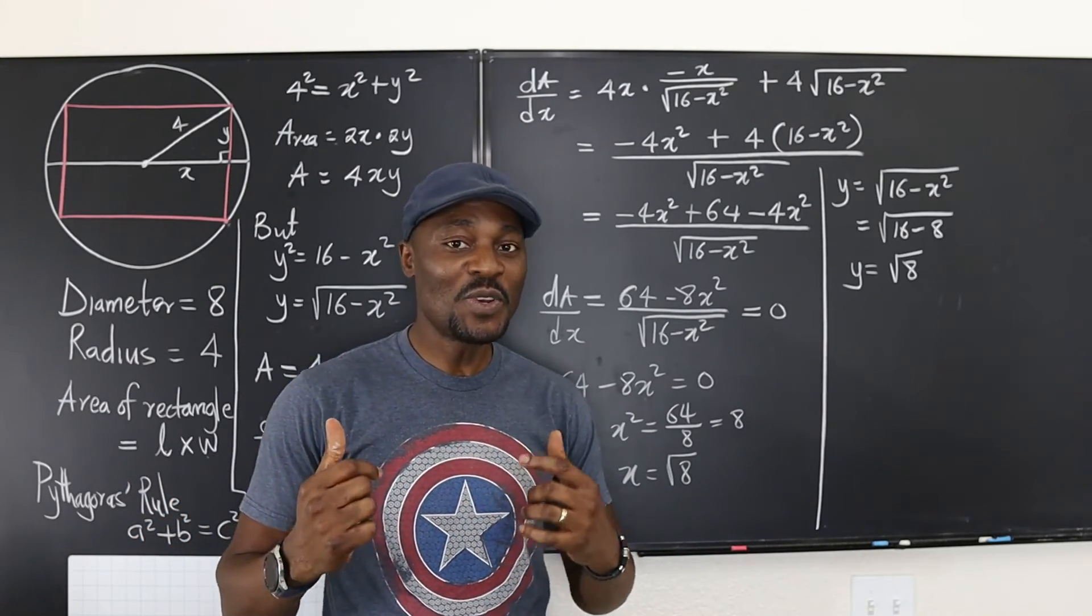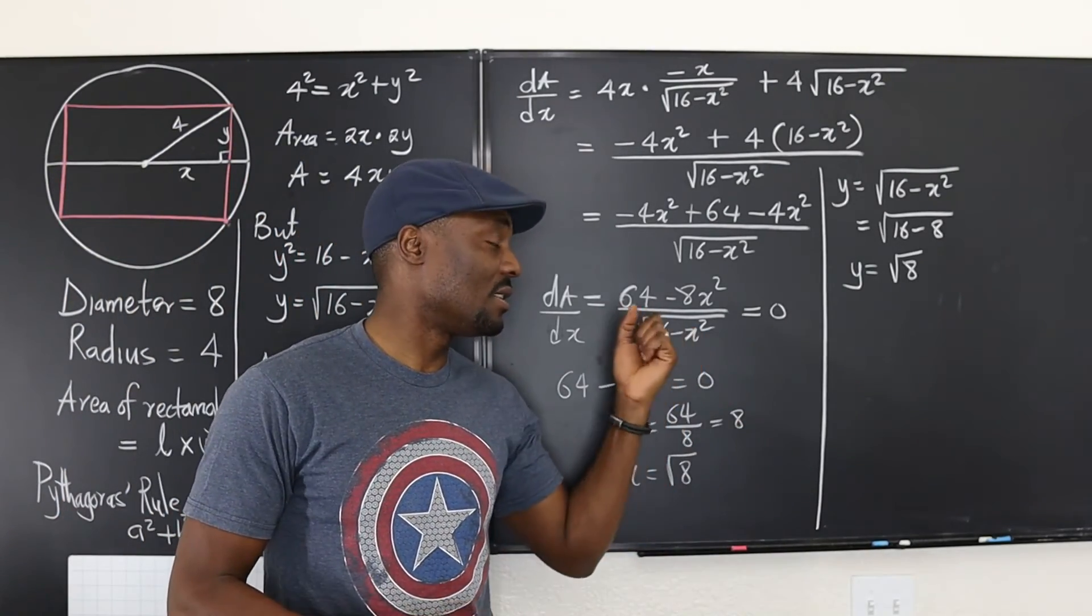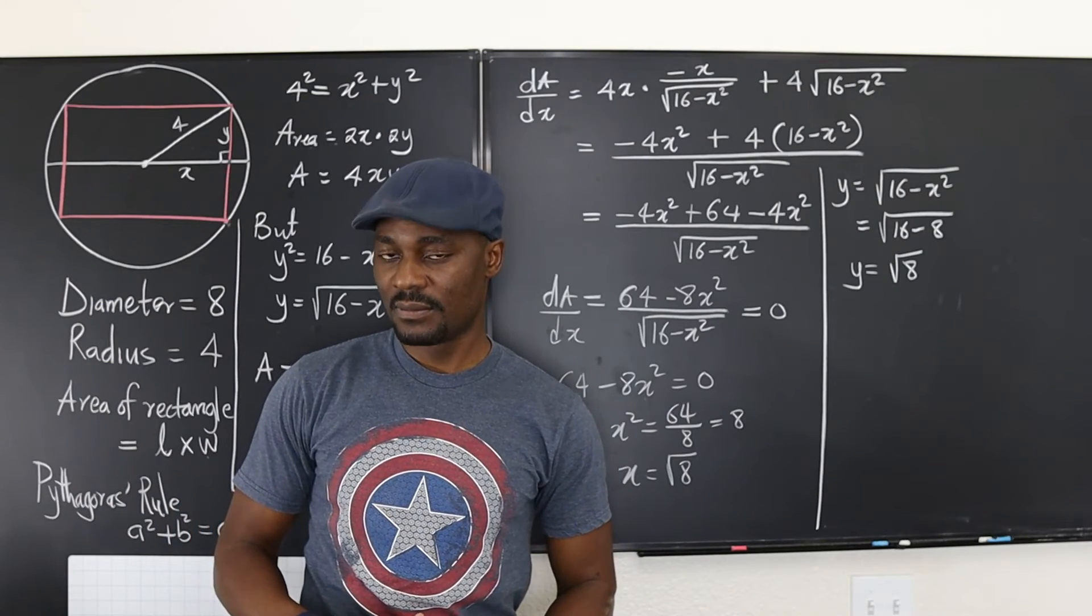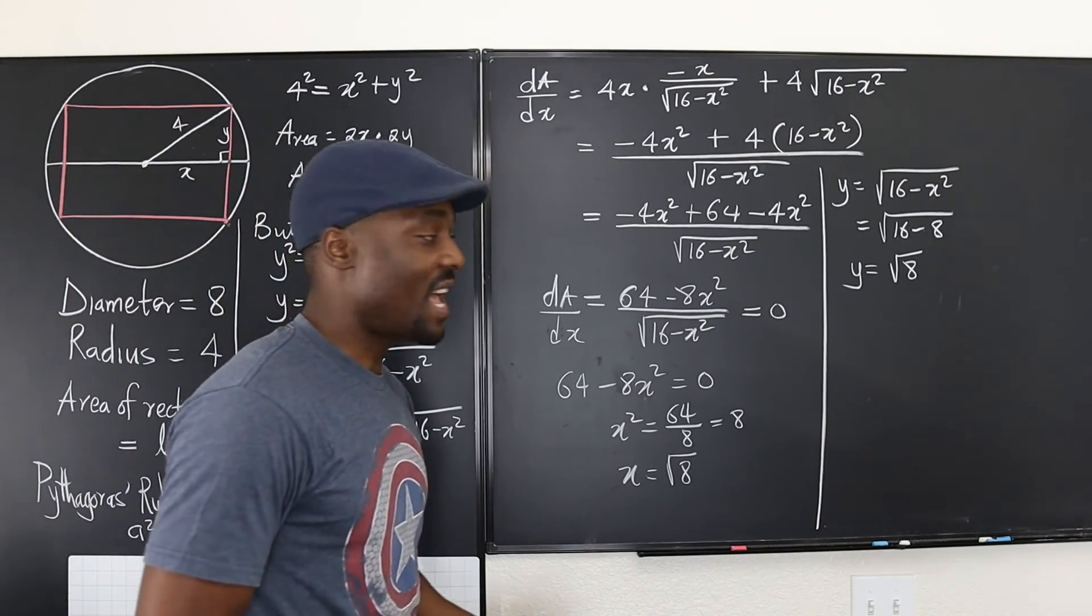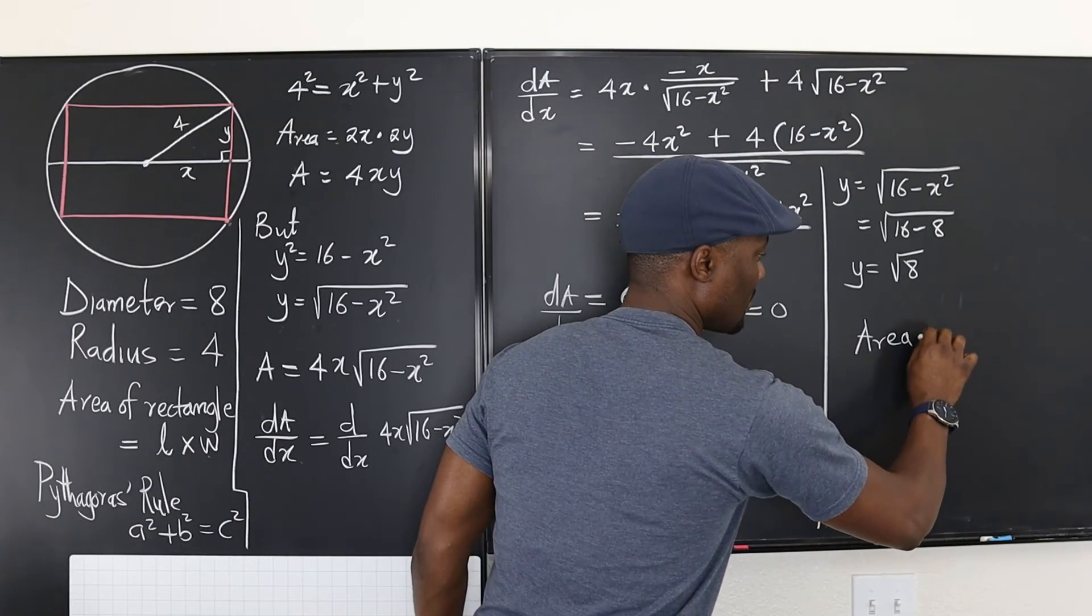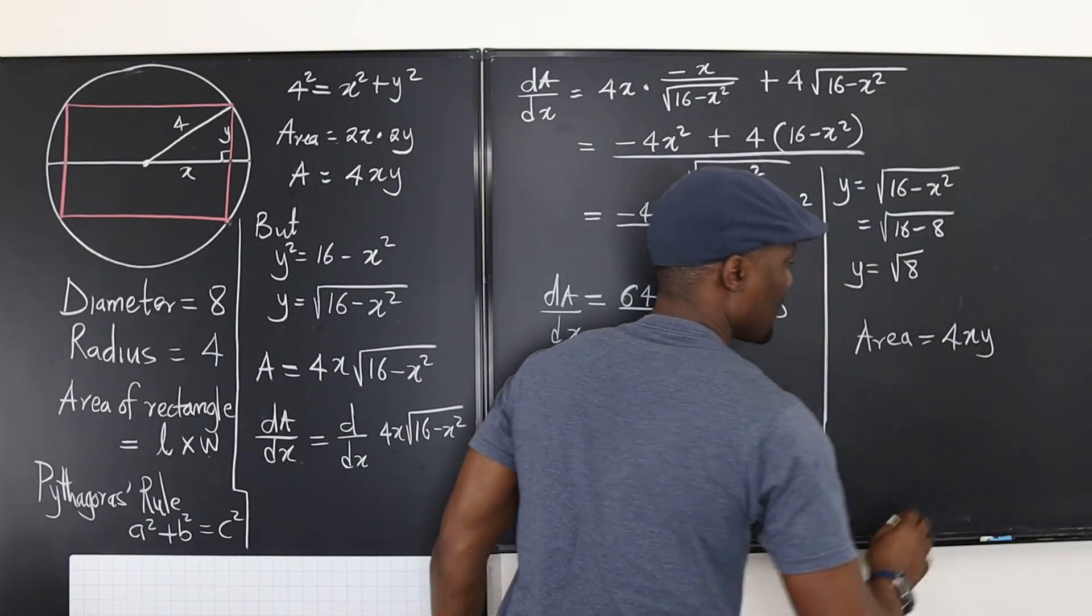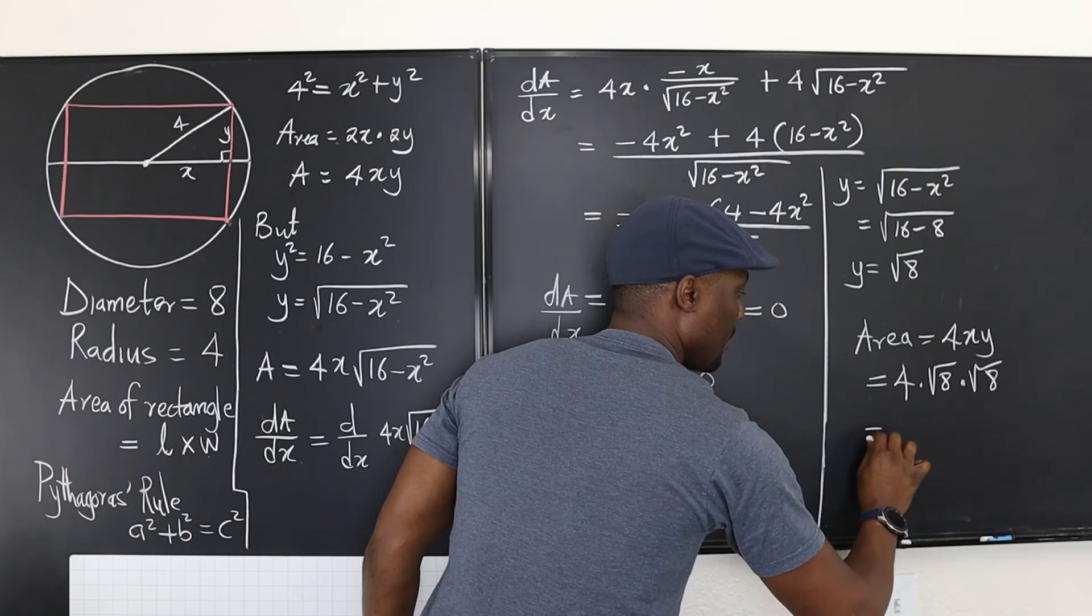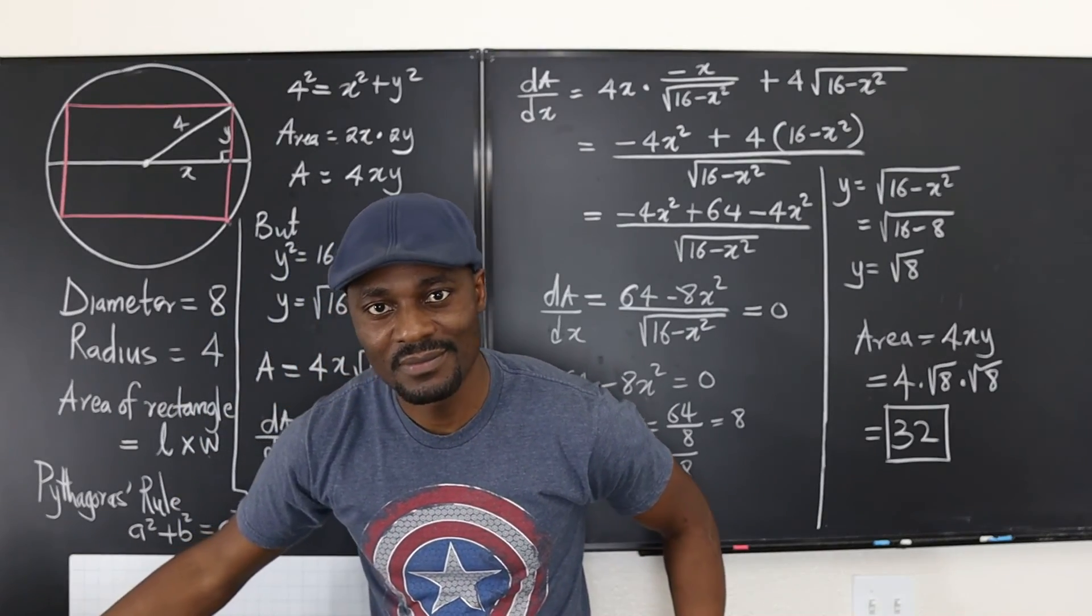Remember what I said? So now we've proved by optimization that the largest quadrilateral, the largest rectangle you can inscribe in a circle will always be a square. So what's the question itself? What is the area of the largest rectangle? Let's find our area. That'll be 4xy.